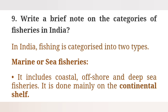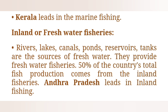Question 9: Write a brief note on the categories of fisheries in India. The categories include: Marine or sea fisheries — it includes coastal, offshore and deep sea fisheries, done mainly on the continental shelf. Kerala leads in marine fishing.